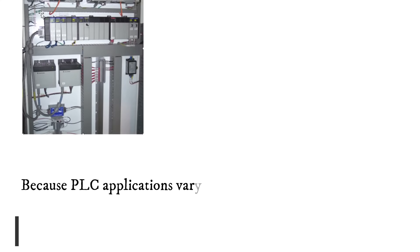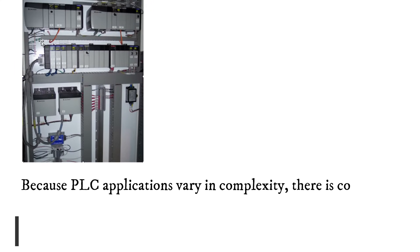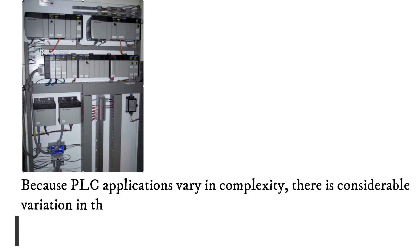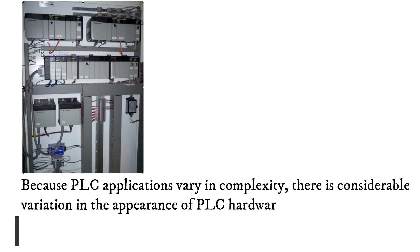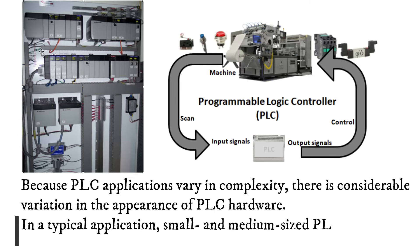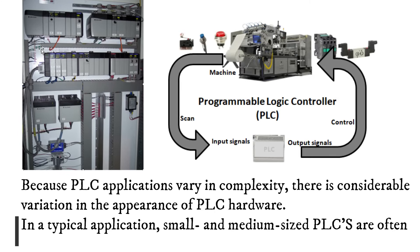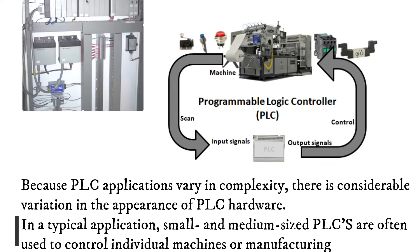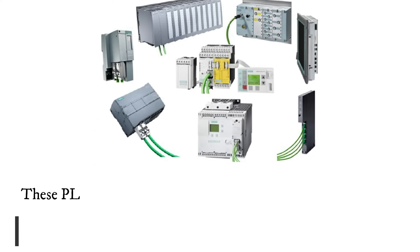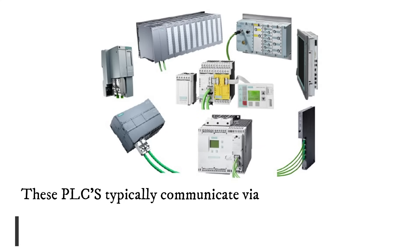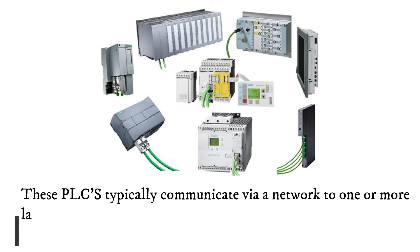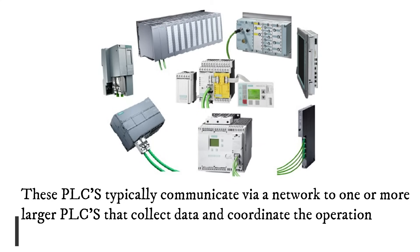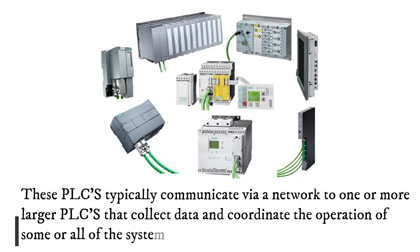Because PLC applications vary in complexity, there is considerable variation in the appearance of PLC Hardware. In a typical application, small and medium-sized PLCs are often used to control individual machines or manufacturing cells. These PLCs typically communicate via a network to one or more larger PLCs that collect data and coordinate the operation of some or all of the system.